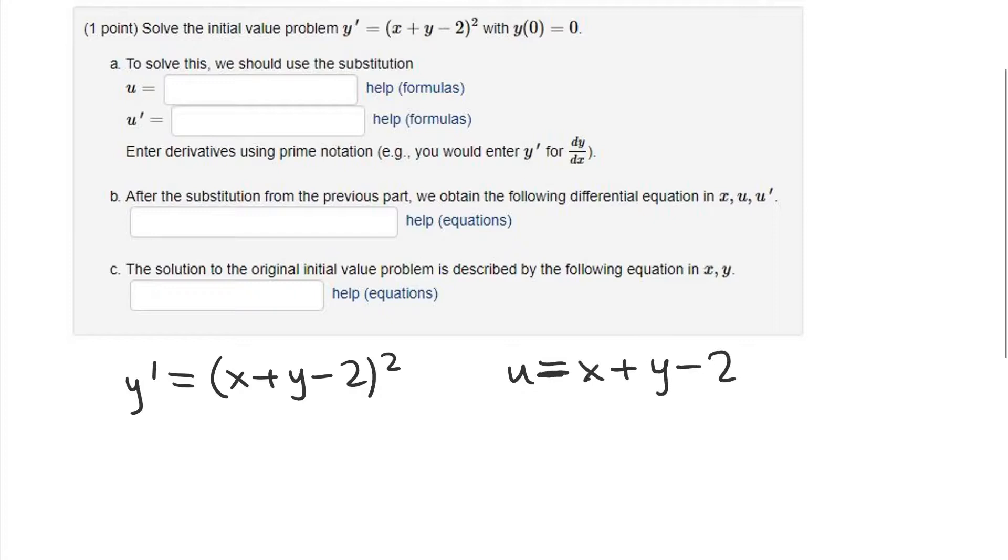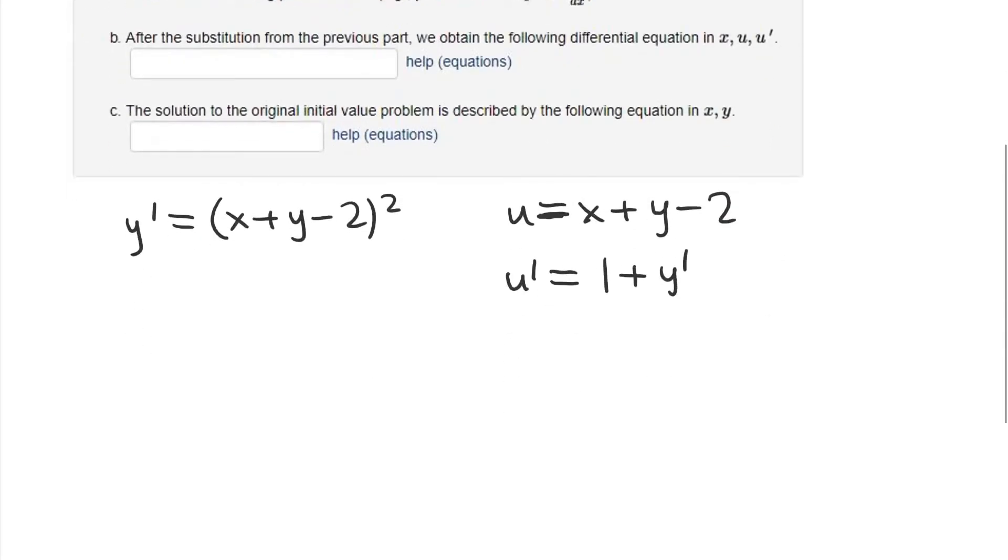When I do that and take the derivative with respect to x of both sides, on the left side I get u'. On the right side, I get the derivative of x with respect to x is 1, the derivative of y with respect to x is y', and the derivative of a constant is 0. So now you can see,